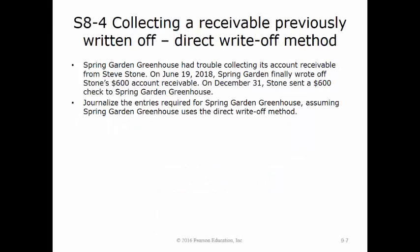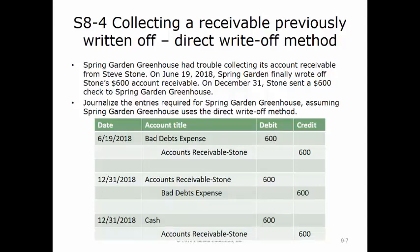In this exercise, we will record the collection of a receivable that was previously written off using the direct write-off method. Spring Garden Greenhouse had trouble collecting from Steve Stone. On June 19, Spring Garden wrote off Stone's $600 accounts receivable. On December 31, Stone sent a $600 check. On June 19, 2018, we debit bad debts expense and credit accounts receivable Stone for $600. On December 31, when we received the check, we reinstate the receivable by debiting accounts receivable Stone and crediting bad debts expense for $600. Then we record cash received by debiting cash and crediting accounts receivable Stone for $600.